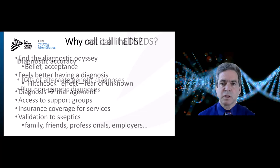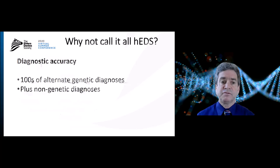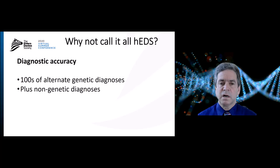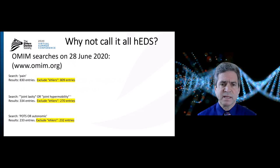So these are all reasons why it serves a purpose to just call all of this hypermobility EDS. It gives it a name, it validates it, it makes it real. So why not call it all hypermobility EDS? There are lots of reasons. The first I want to emphasize is diagnostic accuracy. There are actually hundreds of alternate genetic diagnoses that could explain pain or joint hypermobility — and that's just the genetic diagnoses.